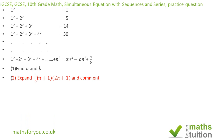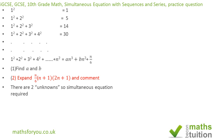The question asks you to find a and b for the first part, and for the second part it says expand n over 6 into (n+1) into (2n+1) and then comment. Because we're looking for two unknowns, this suggests that we need simultaneous equations for this exercise.